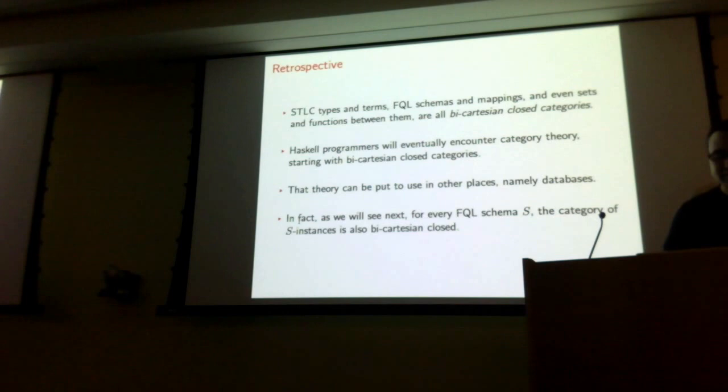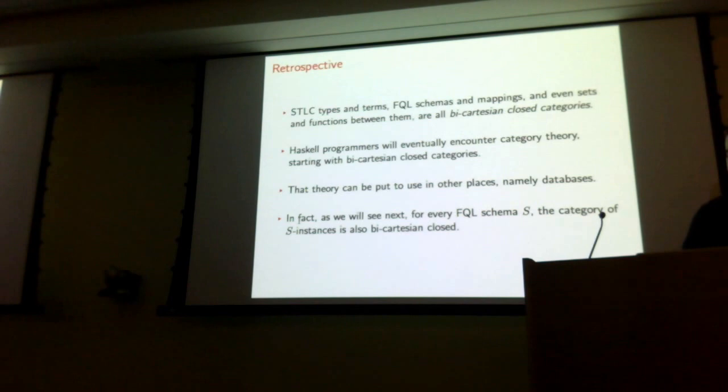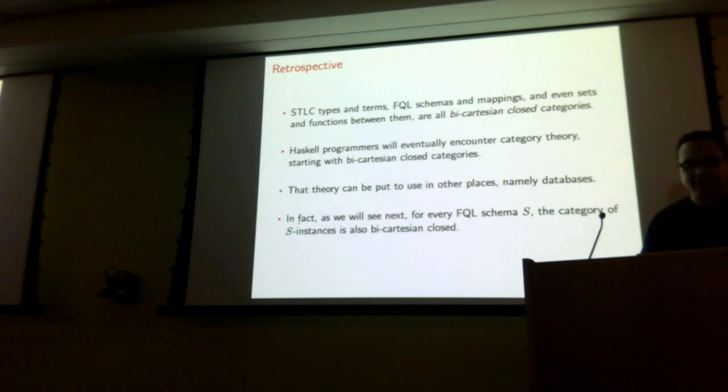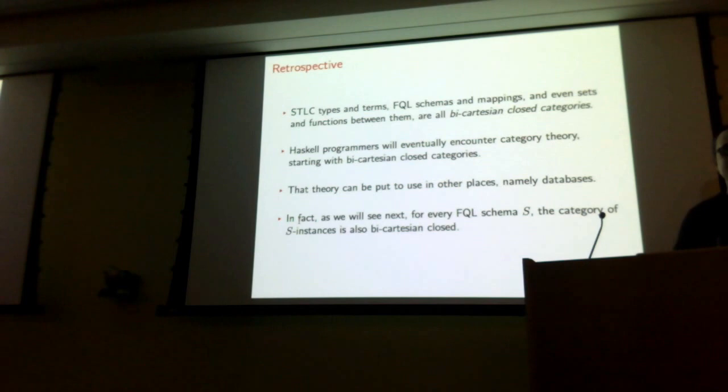Some broader remarks: what's going on is that simply typed lambda calculus types and terms, FQL schemas and mappings, and even sets and functions between them, are all instances of this thing called the bicartesian closed category. At some point people who are interested in Haskell will eventually run up against category theory. I hope this convinces you that if you learn category theory to understand Haskell better, you can also apply category theory in other places, such as databases.